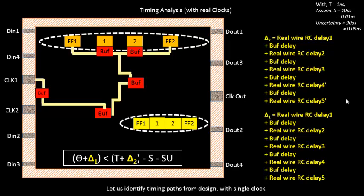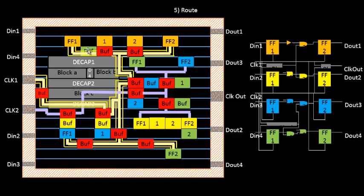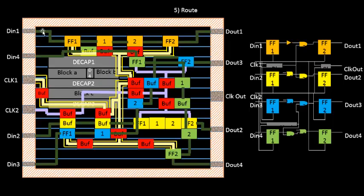After the quick timing analysis at clock tree synthesis, the next step is to route the design. During routing, we get access to real wires — there are no more estimated wires. The routes are based on connectivity from the netlist, so for example din3 is connected to flip-flop 1 based on netlist connectivity. The route stage must maintain the existing timing scenario from the CTS stage and should not deteriorate it — if timing can be improved it can be, but it must not get worse.